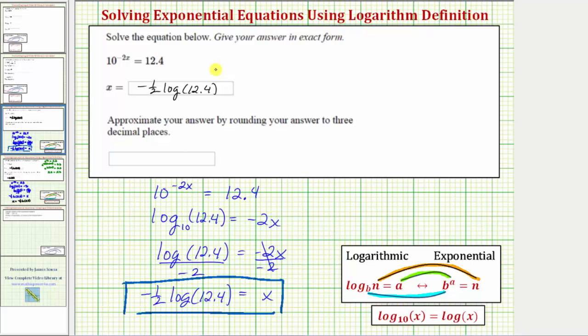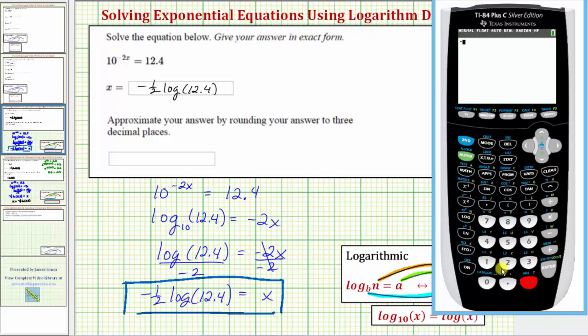Now let's also get our decimal approximation using the calculator. We have negative one half, and common log is this button here. Again, common log is log base 10. We have common log 12.4.